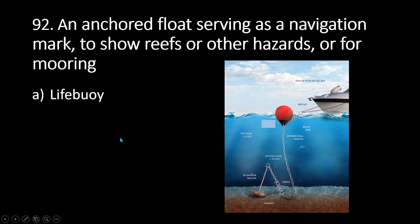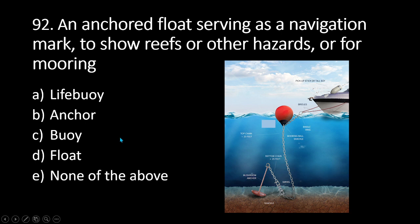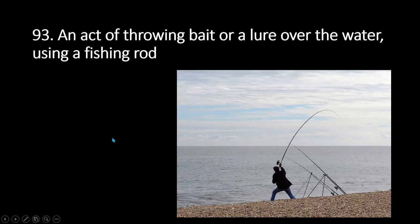Number 92: an anchored float serving as a navigation mark to show reefs or other hazards or for mooring. A. Life buoy, B. Anchor, C. Buoy, D. Float, E. None of the above. The answer is C. Buoy. A buoy is an anchored float serving as a navigation mark to show reefs or other hazards or for mooring.